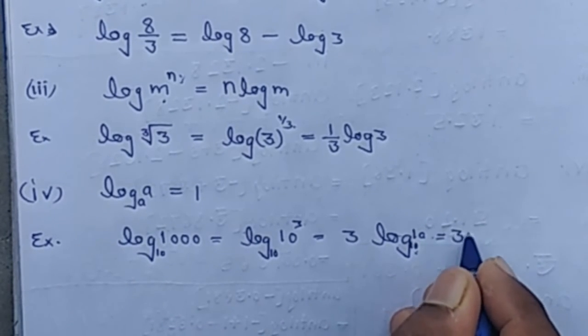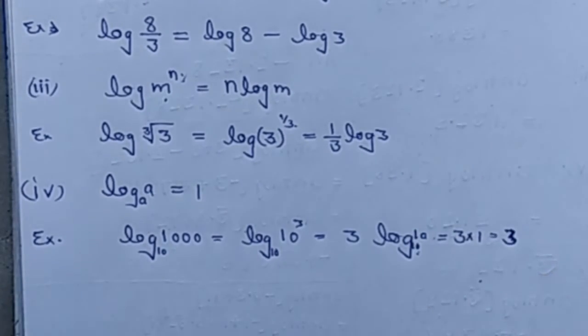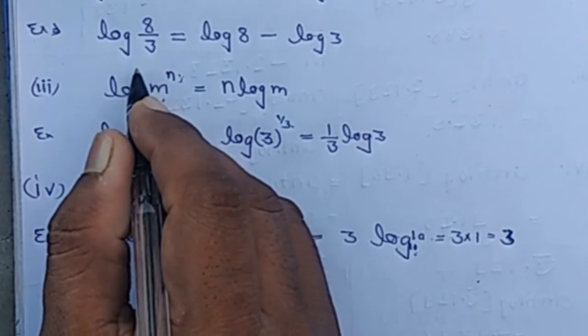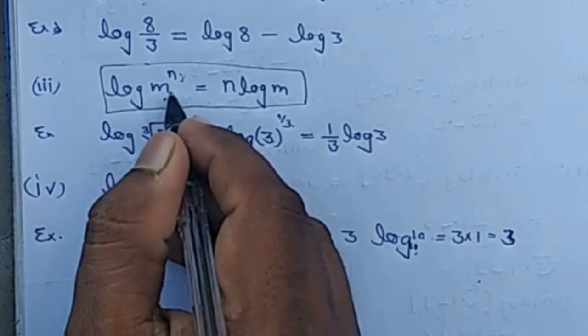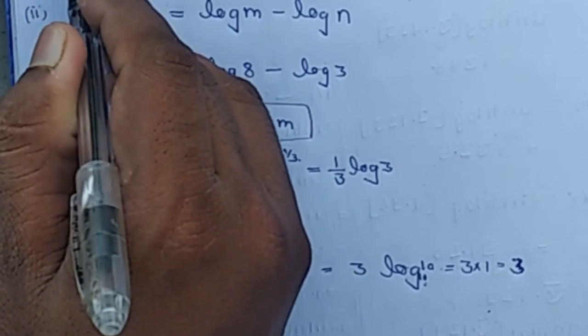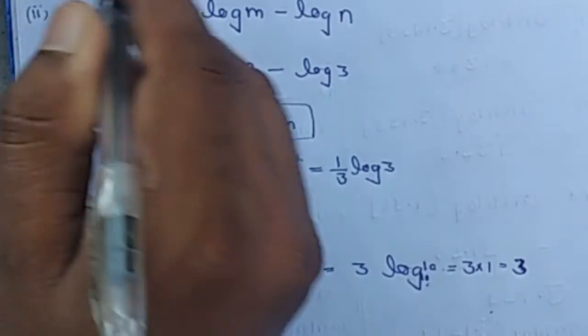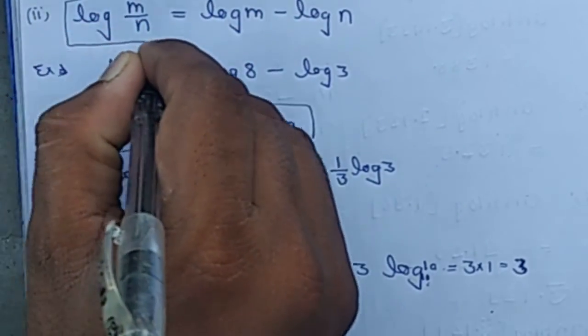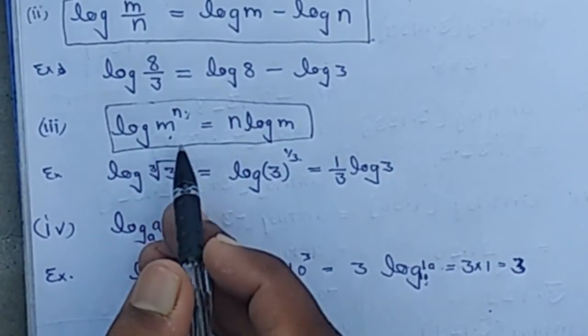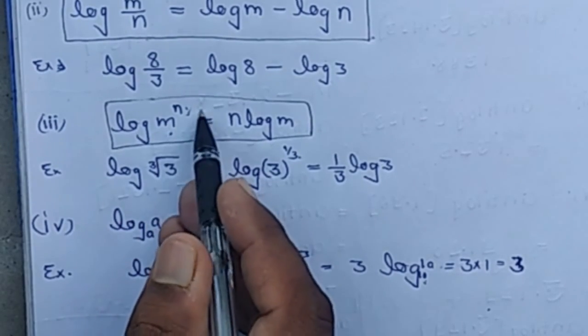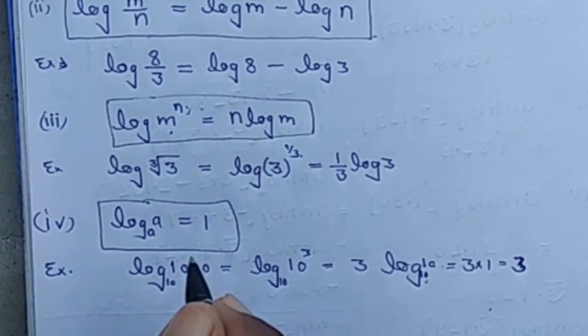So there are three important formulas: First is log(m×n) = log m + log n. Second is log(m/n) = log m - log n. Third is log(m^n) = n log m. And fourth is log_a(a) = 1.